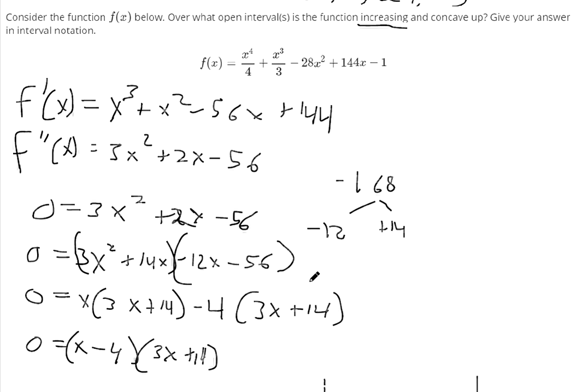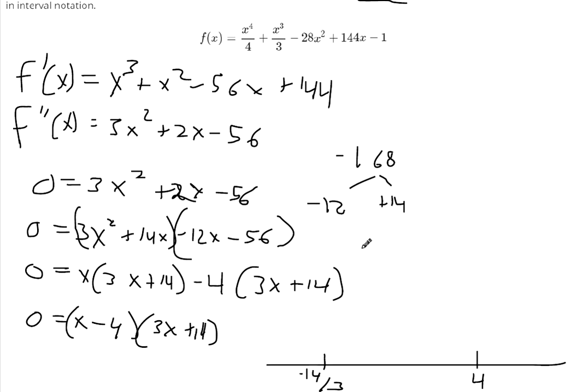So to find out where it's concave up, we want the second derivative to be positive. So we want to check values to the left and to the right of each of these. So negative 14 over 3. How about we plug in negative 5? That's something to the left. 0 is always great if we can plug it in, so that's between those two. And how about 5 in here? We just care about the signs. We don't really care about what the specific number is.